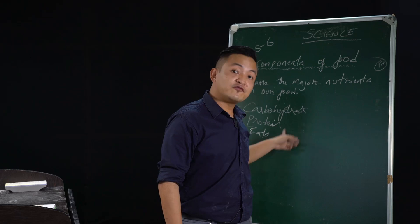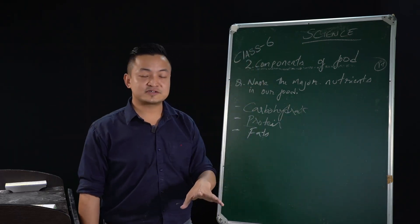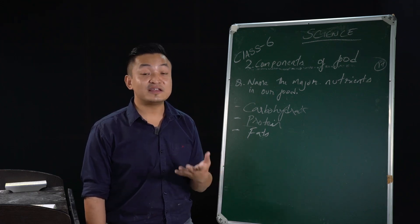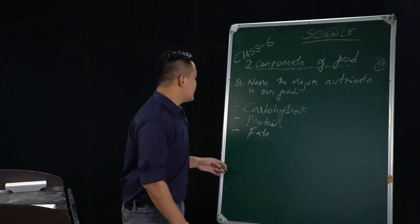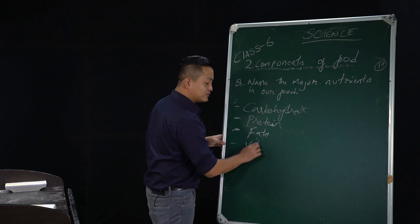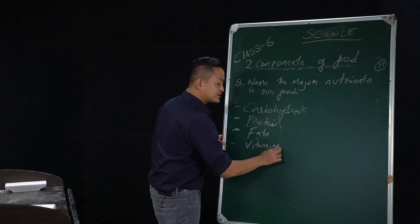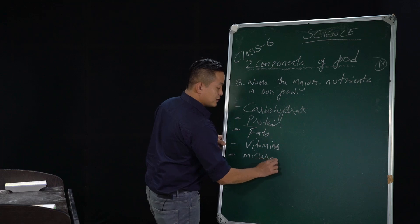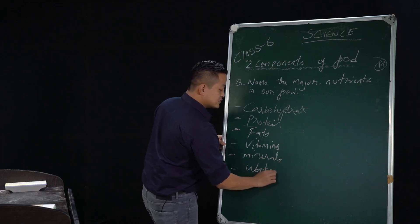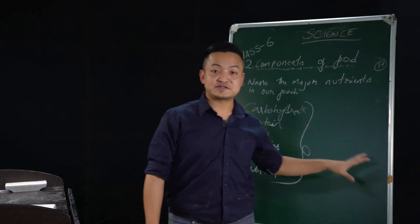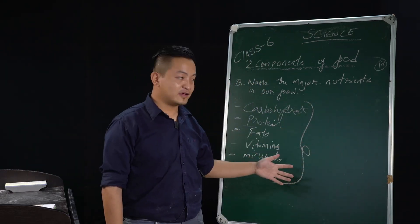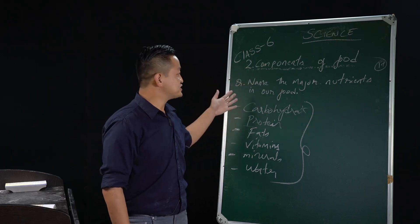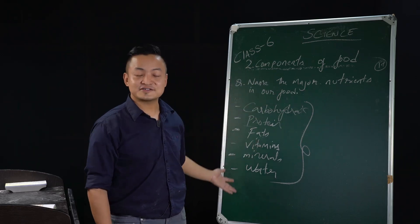The third nutrient is fats — this is also an energy-giving food. When we compare, both carbohydrates and fats give energy, but fats give more energy compared to carbohydrates. Fats also keep our body warm, help in maintaining hormones, and provide for fat-soluble vitamins like vitamin A, D, E, and K. The fourth are vitamins, which protect us from diseases. Then we have minerals and water. So these are the nutrients present in the food you take every day — that's the answer to question 1 on page 17.